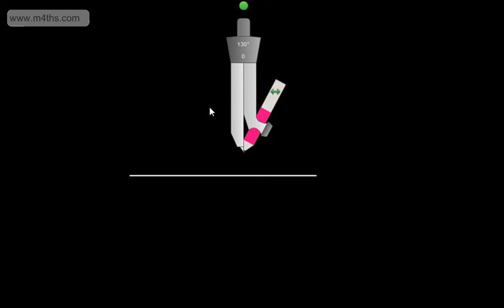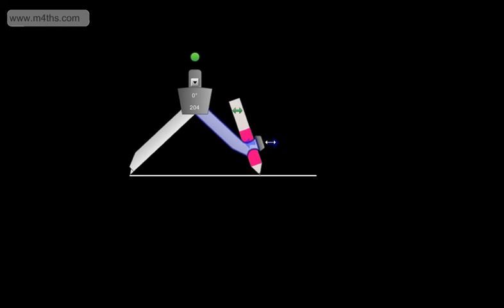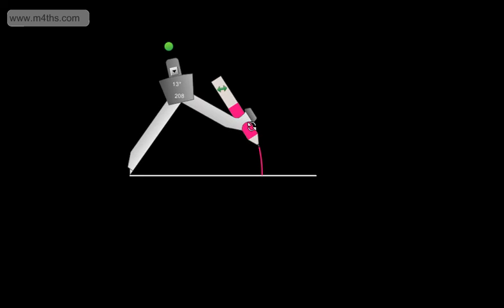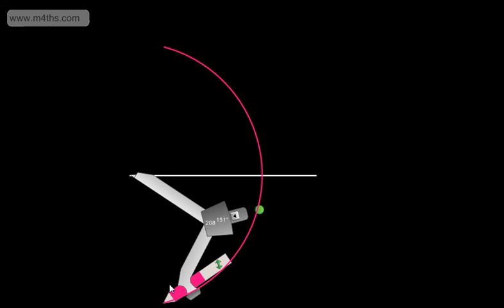All we do is take a compass and we put the sharp end at one end of the line. I'm now going to open up the compass just past halfway. At this stage, we swing an arc up and then come back round and swing an arc down.